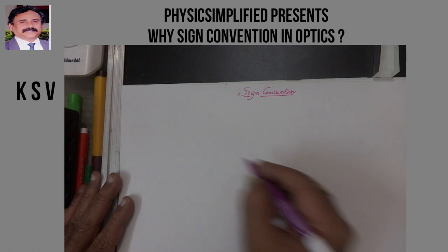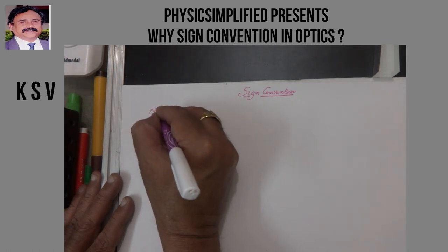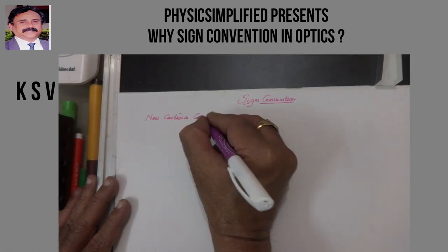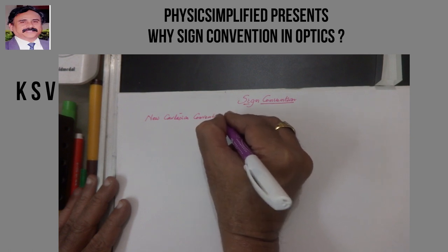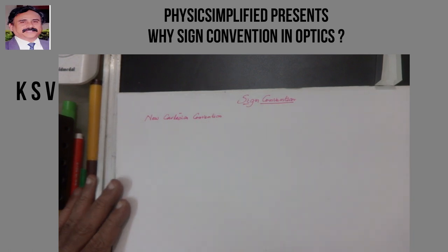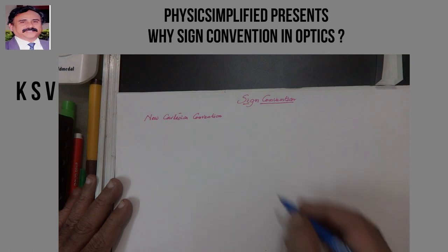Let us discuss the new Cartesian sign conventions. In this, all the distances are measured from the pole in the case of mirrors, and in the case of lenses, all the distances will be measured from the optical center.